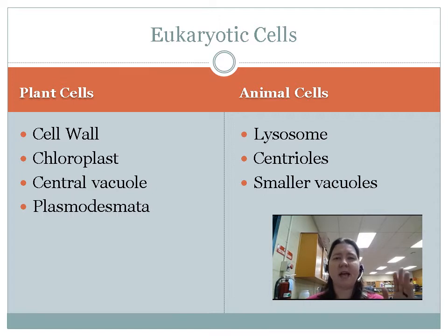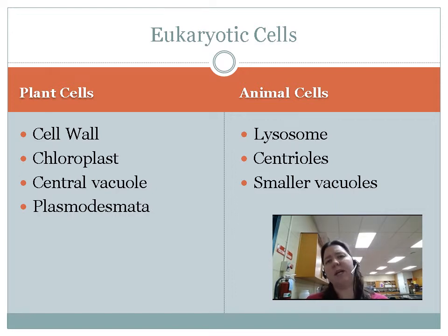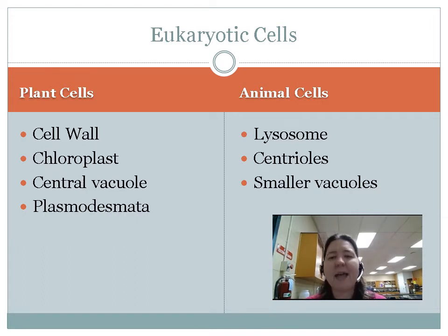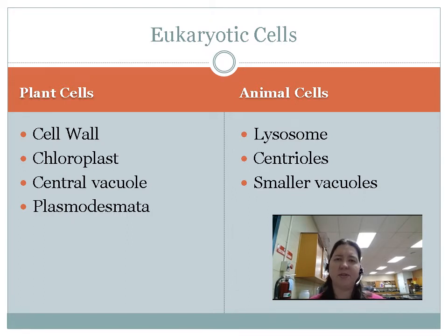Plant cells have a cell wall, a chloroplast, a central vacuole, and plasmodesmata — that's actually one of my favorite biology words to say. And then animal cells tend to have lysosomes, centrioles, and smaller vacuoles. So animal cells still have vacuoles, but they're a lot smaller.